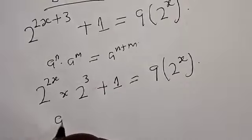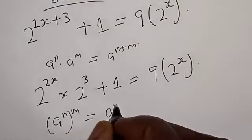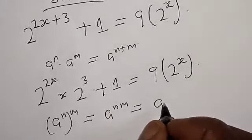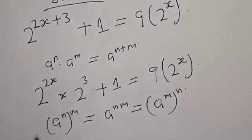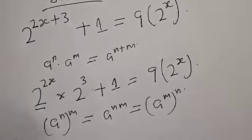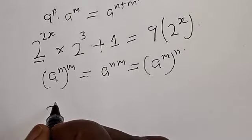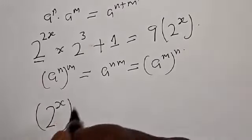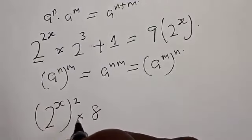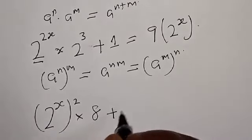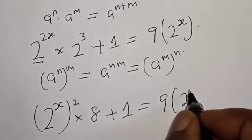Also, if you have a raised to power n raised to power m, that is the same as a raised to power n times m, which equals a raised to power m raised to power n. Therefore, this can be expressed as 2 raised to power s squared, multiplied by 2 raised to power 3, that is 8, plus 1, is equal to 9 into 2 raised to power s.